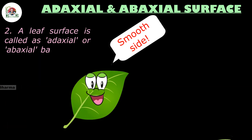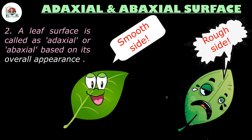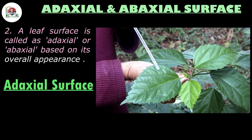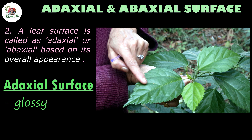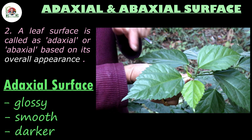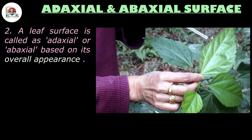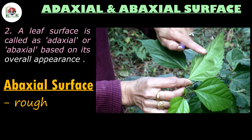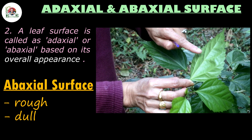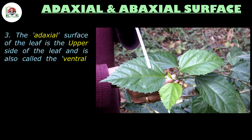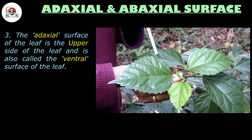The second important identifying feature is the overall appearance of the leaf surface. You must have noticed that the adaxial surface of the leaf is glossy, smooth to touch, and darker in color. On the other hand, the abaxial surface is comparatively rough, dull, and lighter in color. The adaxial surface of the leaf is actually the upper side of the leaf.